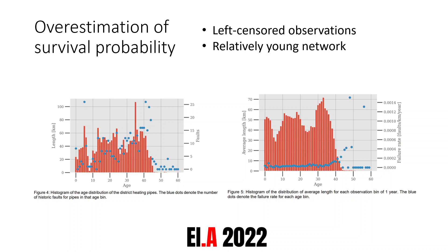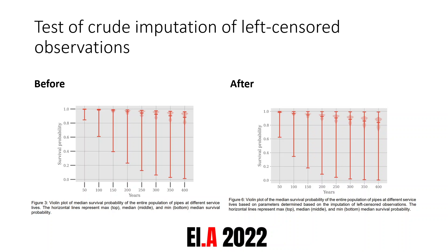We tried to resolve this issue of missing observations with a crude imputation technique to artificially construct some missing observations and reduce the bias. The result, visible on this slide, shows that after imputation and re-fitting the model parameters, survival probability is reduced a bit but not much. This means imputation helps but only to a limited degree, and it also indicates that missing observations are probably not a major reason for the large discrepancy we observe.